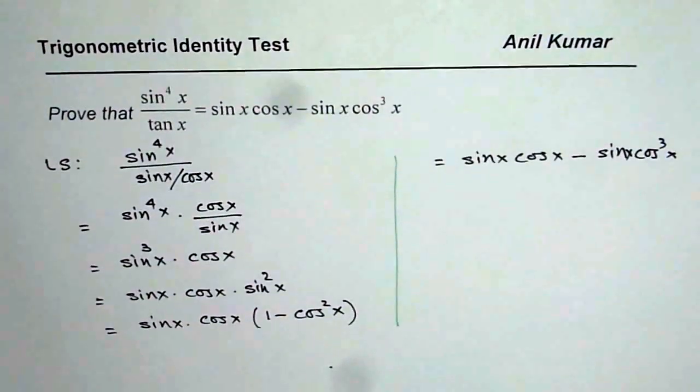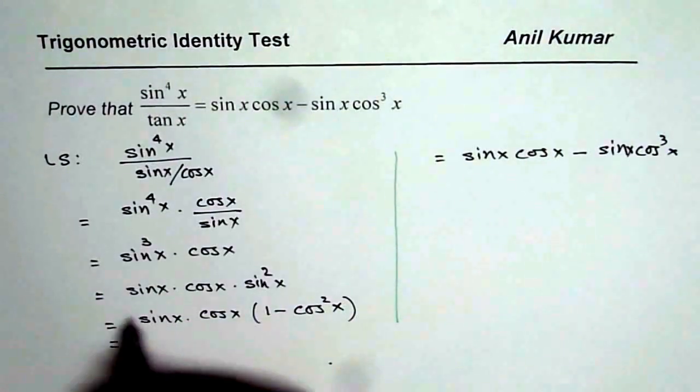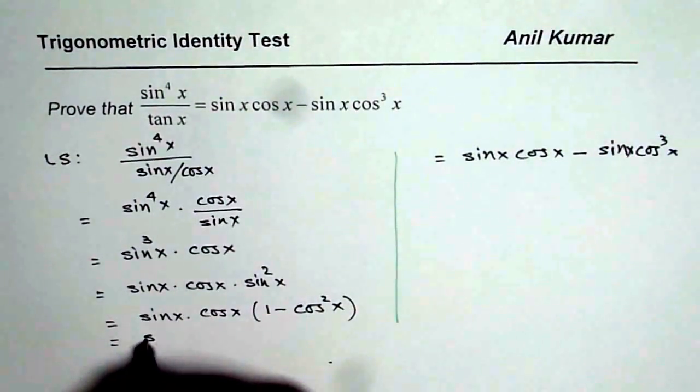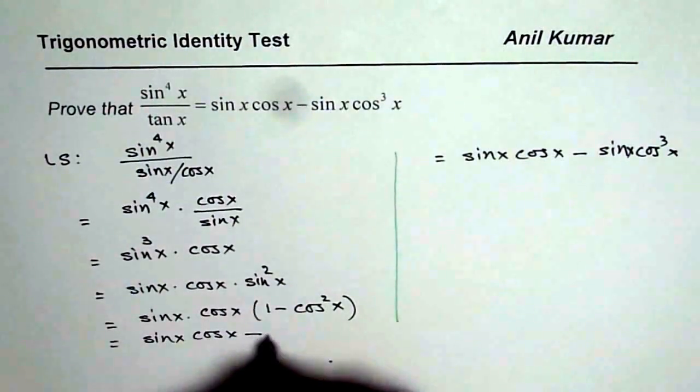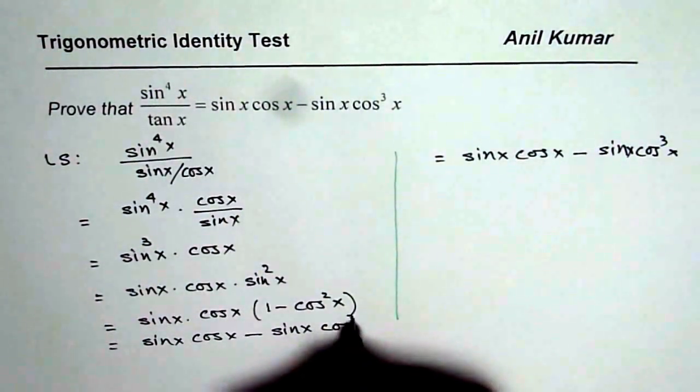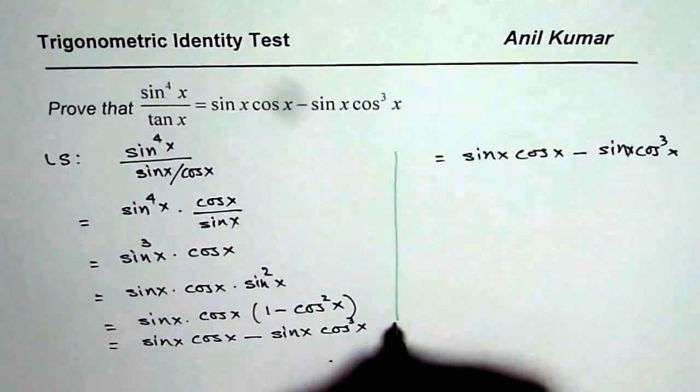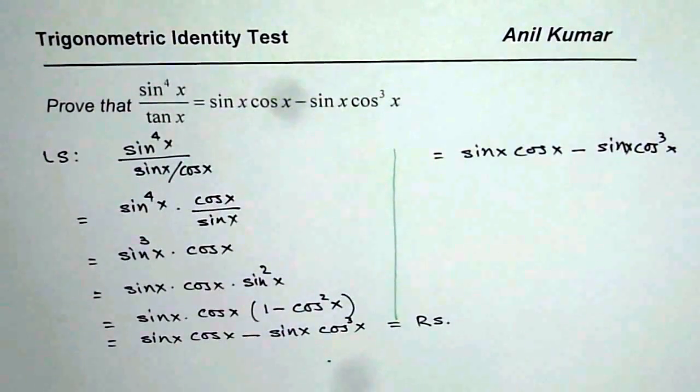Normally it is a custom to do one side on one side, so let me just expand it here itself. Since this line completes the solution, we have sin cos x minus sin cos cube x. I hope you can see this, and that is equals to the right side and therefore we have proven the identity that left side is equals to right side.